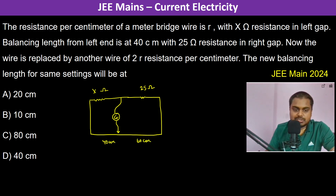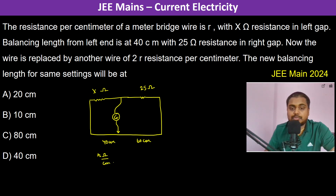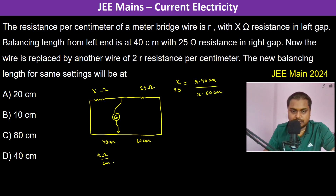The resistance is r ohm per centimeter. Using the Wheatstone bridge concept, X divided by 25 is equal to r times 40 centimeters divided by r times 60 centimeters. Therefore, X is equal to 25 into 2 upon 3. This is equation 1.